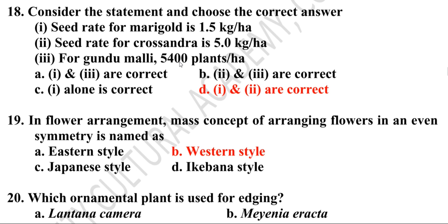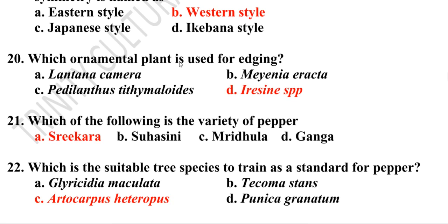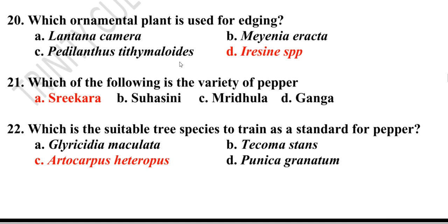Nineteenth question: The concept of arranging flowers in even symmetry is named as Western style, whereas Eastern style follows specific rules and regulations. Twentieth question: Which ornamental plant is used for edging? Option D is the correct answer — it is an Ixora species.